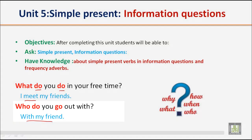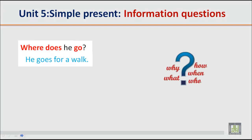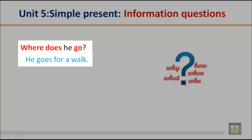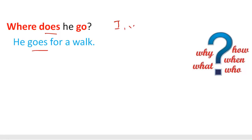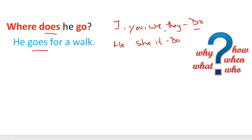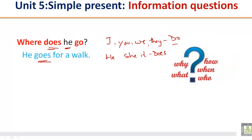Let's look at another example: 'Where does he go?' — 'He goes for a walk.' Remember, as discussed in the last unit, with I, you, we, and they we use 'do', while with he, she, and it we use 'does'. So since the subject here is 'he', we use 'does': 'Where does he go? He goes for a walk.'